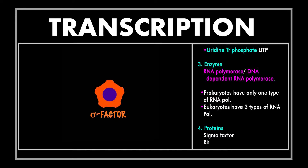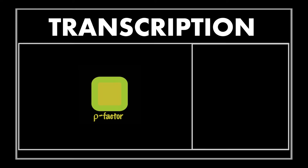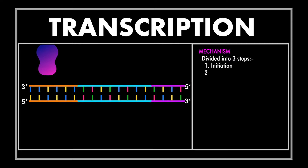A few proteins called sigma factor and rho factor are also required. Sigma factor helps in the initiation of transcription by attaching to the RNA polymerase and helping it recognize the conserved sequences of the promoter. The rho factor helps in termination by binding to the terminator site and releasing the primary transcript.